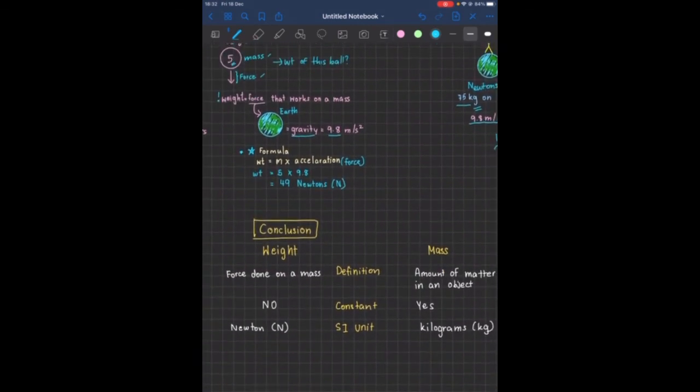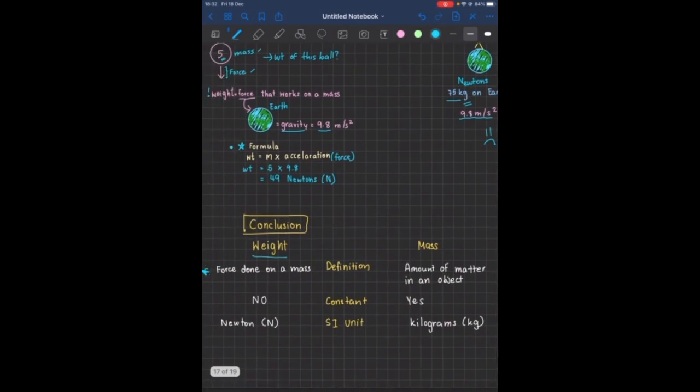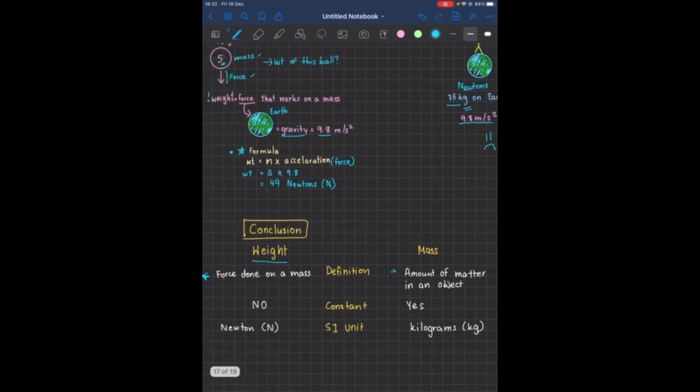Conclusion. The definition for weight: it's the force done on a mass, force that works on a mass. While mass is the amount of matter in an object.